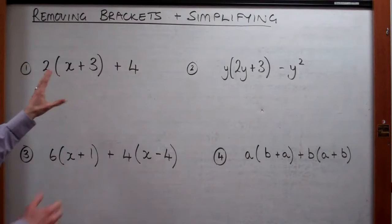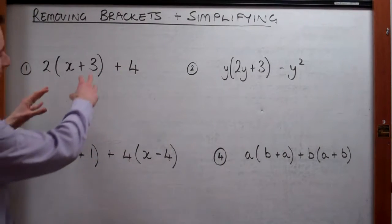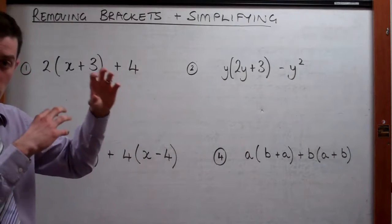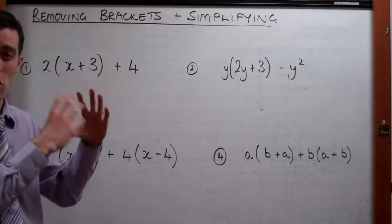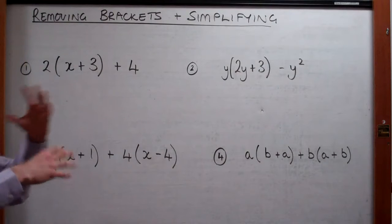So what we're going to be doing is we're going to be taking the bracket off of an expression and then with whatever's left we're going to make the expression simpler. And that means making it smaller. So we're going to be adding things together and taking them away.